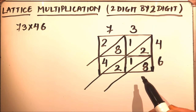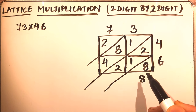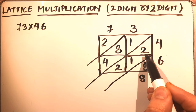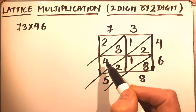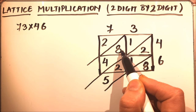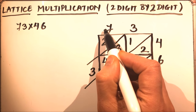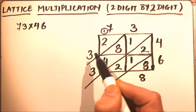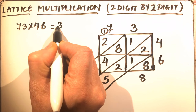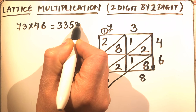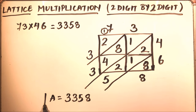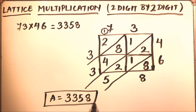Now we'll add the numbers along the diagonal columns. The first diagonal is just eight. The next diagonal: two plus one plus two equals five. The next: four plus one plus eight equals thirteen, so we write three and carry one. Then two plus one is three. So our answer is three thousand three hundred and fifty-eight — 3358.